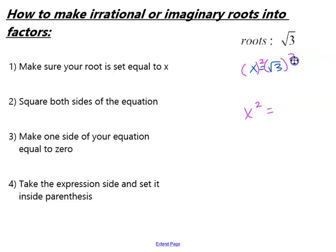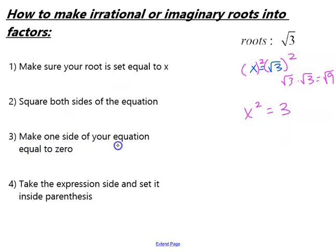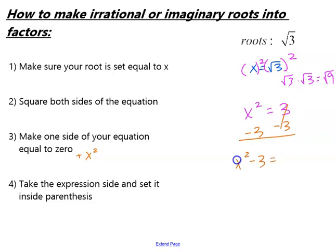And then the square root of 3 squared — remember, this is square root of 3 times the square root of 3, which gives us the square root of 9, and that equals 3. When you take the square root of any number times itself, that number comes out of the radical. Step 3: make one side of your equation equal to 0. We always want our x squared to be positive, so let's subtract 3 to the other side. So now we have x squared minus 3 equals 0.